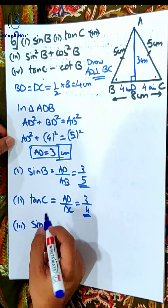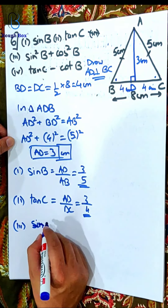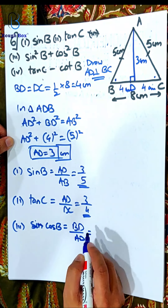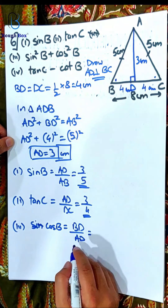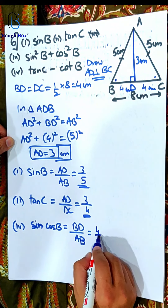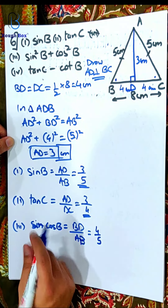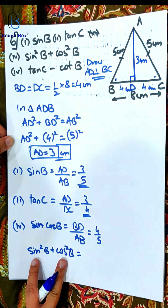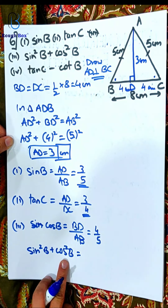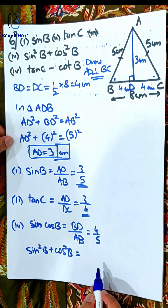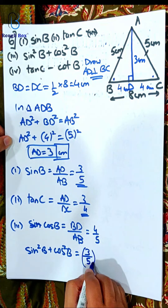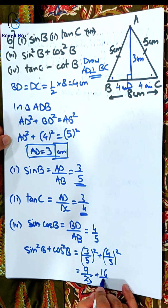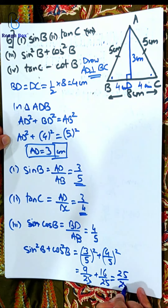Sum number 3. I need sin B which is already there. I need cos B now. Cos B — adjacent upon hypotenuse — that is BD upon AB: 4 by 5. So I got cos B and I have sin B. Let's find this entire expression: sin square B plus cos square B. You remember we did this and I told you it's going to help in standard time. Sin square plus cos square is always equal to 1. So: 3 by 5 squared plus 4 by 5 squared equals 9 by 25 plus 16 by 25 equals 25 by 25 equals 1.